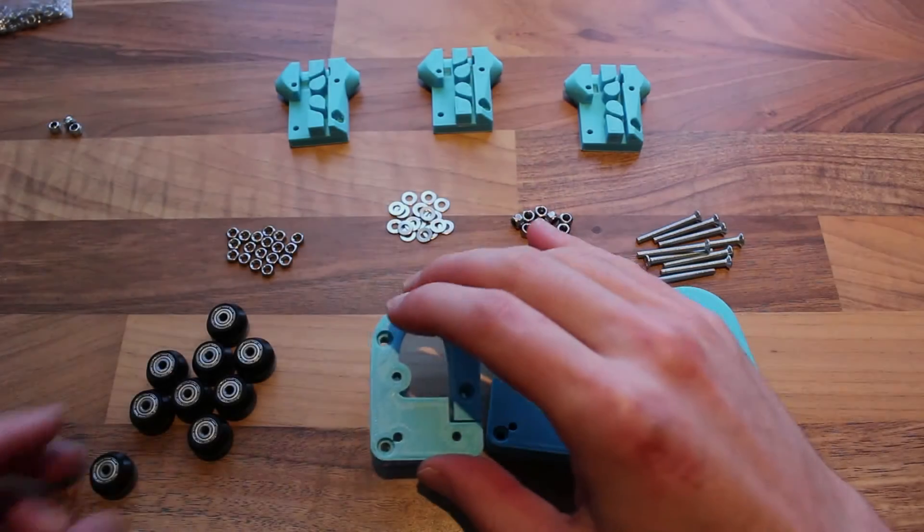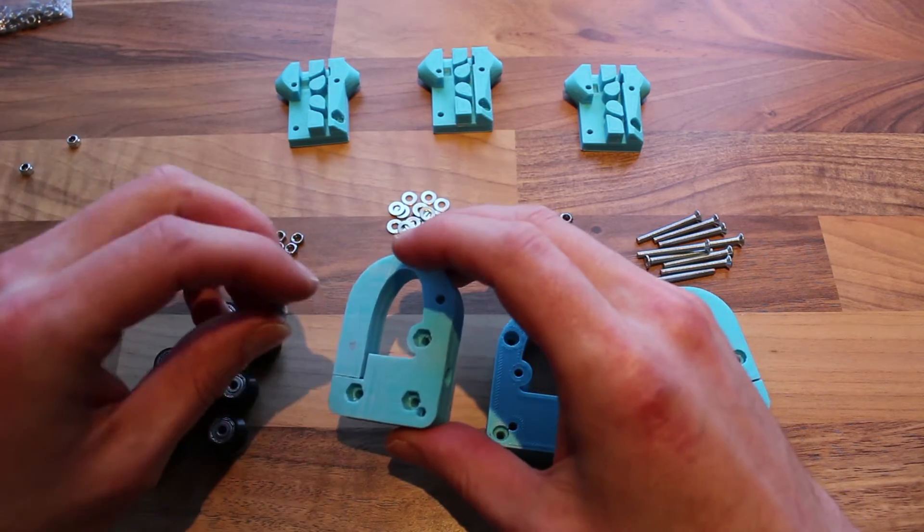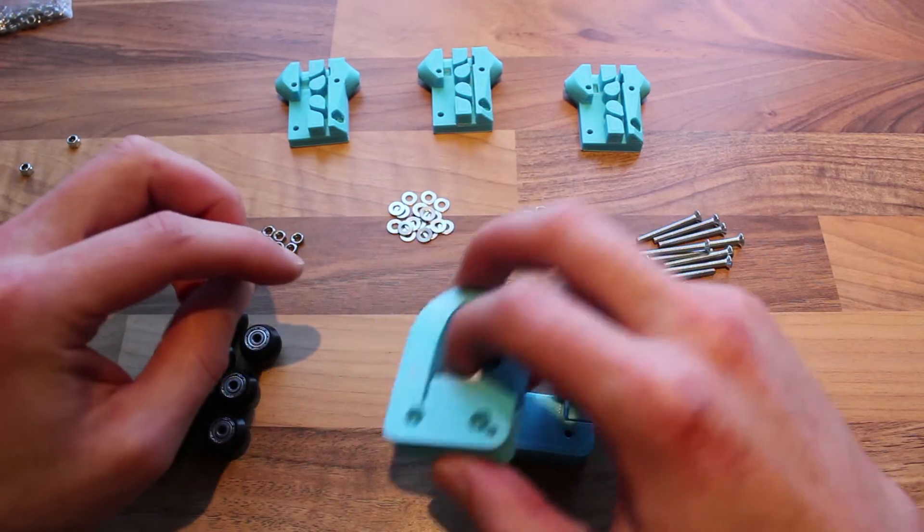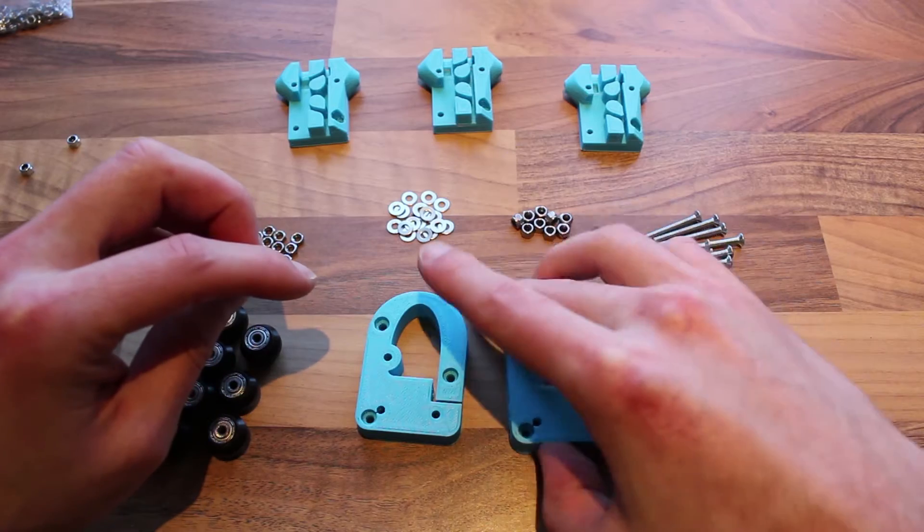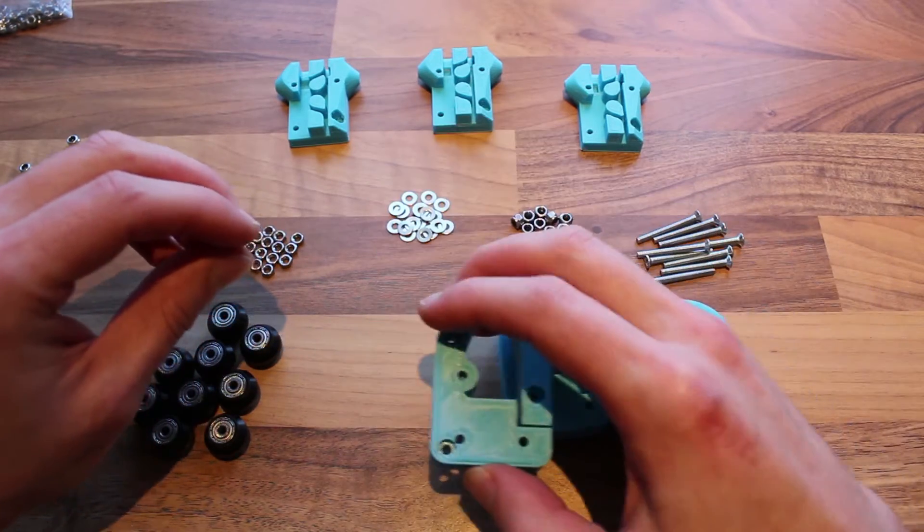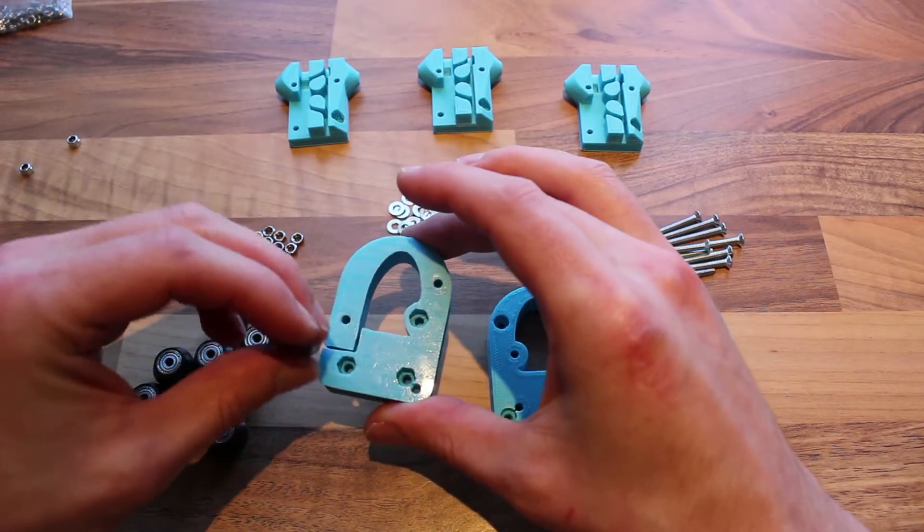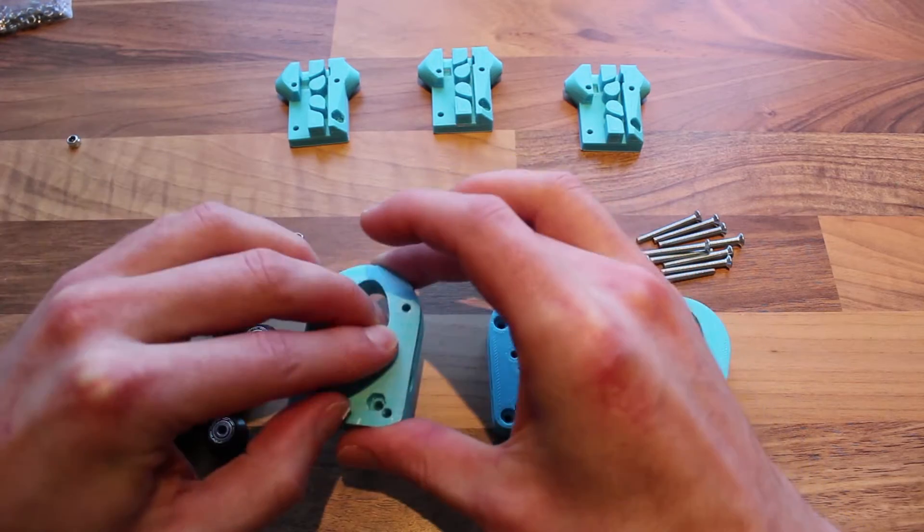Hey guys and welcome back for another build video of my 3D printer. I have all the missing parts now and I'm able to assemble the sliders. Let's get started by placing three lock nuts on the back.